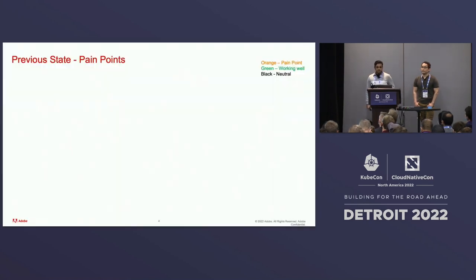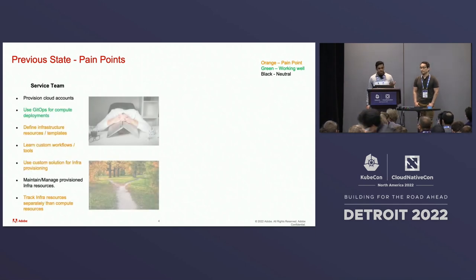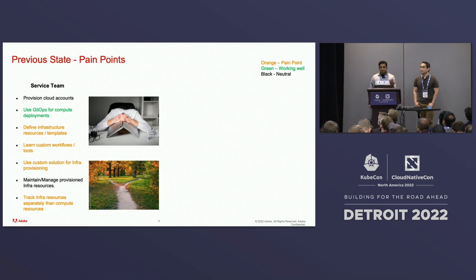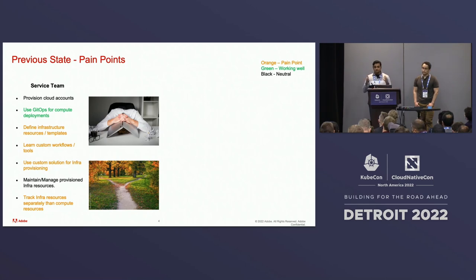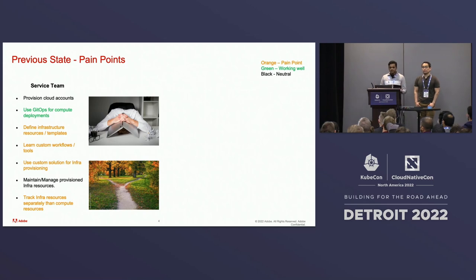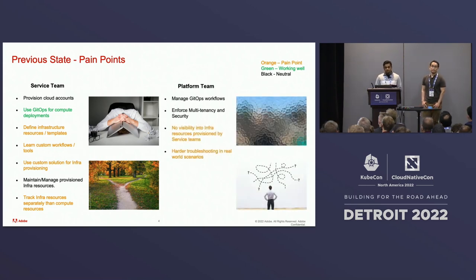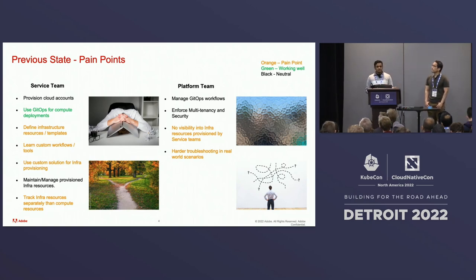Let's look at the previous state and the pain points. If you're a service developer, you'd resonate with a lot of these. We talked to many service developers and realized that each team is doing infrastructure provisioning in their own way. The platform does not help them — they have custom tooling, a lot of learning curve, and they track infrastructure and compute resources separately. If you're on the platform team, we don't have visibility, observability, or auditability into provisioned infrastructure resources, making it hard to troubleshoot issues.